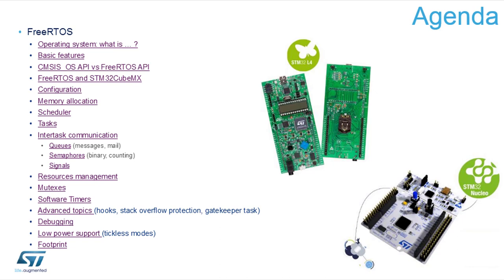We'll have a couple of examples on how to work with that and some live demonstration. We will speak about the setup of FreeRTOS — how you can add or exclude features to save memory space. We will also speak about memory allocation, which is a very important topic because you need to give some memory to different tasks.